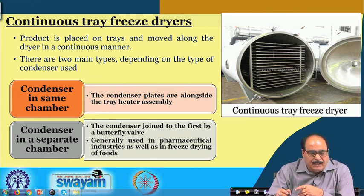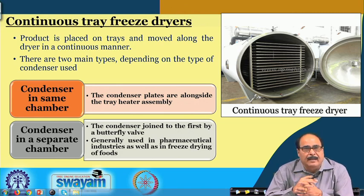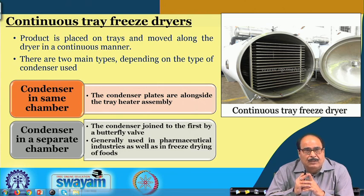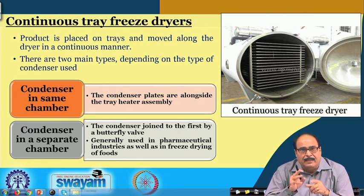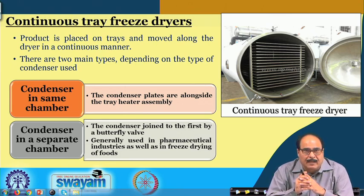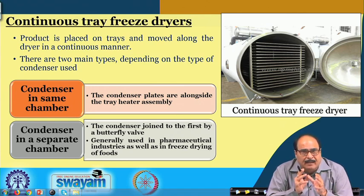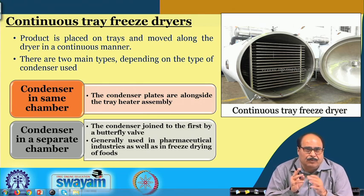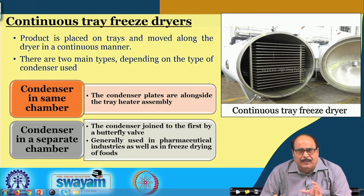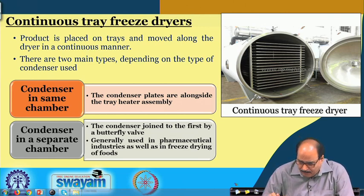There are two main types of continuous tray freeze dryers depending on the condenser used. In one type, the condenser is provided in the same chamber in which the trays are moving, with condenser plates alongside the tray heater assembly. In other systems, the condensers are placed separately, joined to the first by a butterfly valve, and are generally used in pharmaceutical industries as well as for freeze drying of sensitive food materials.